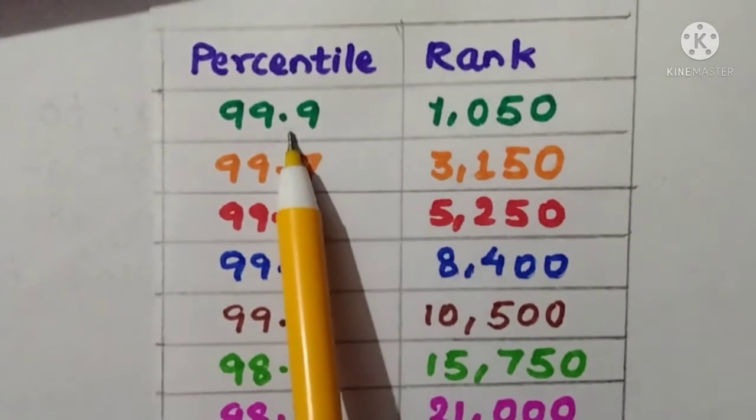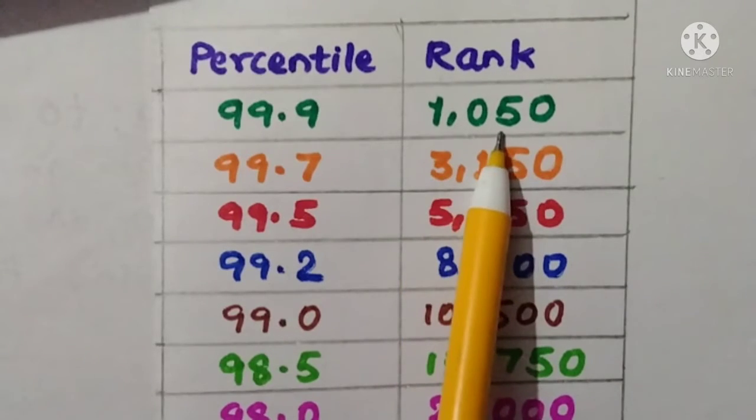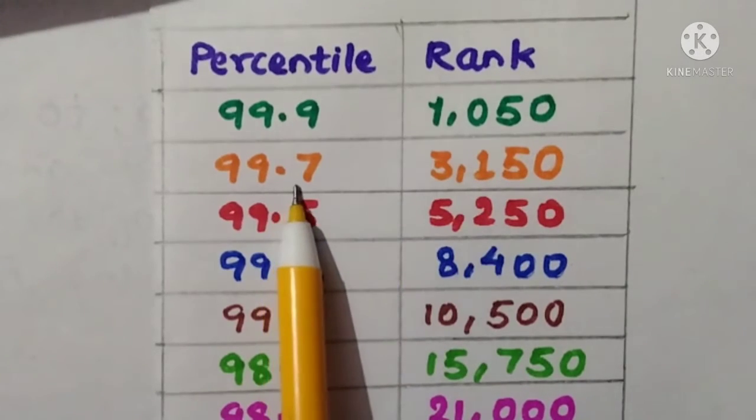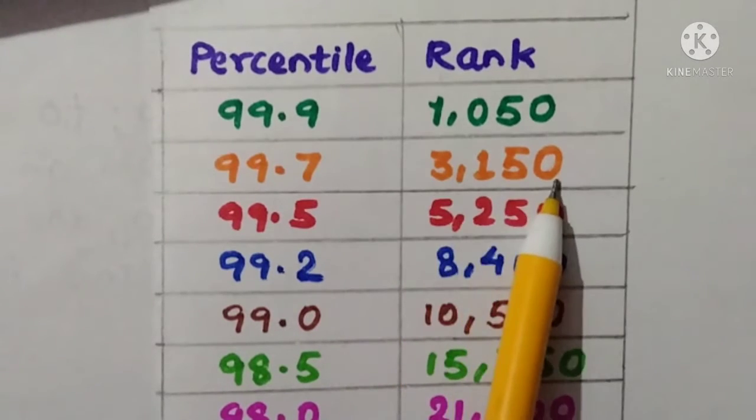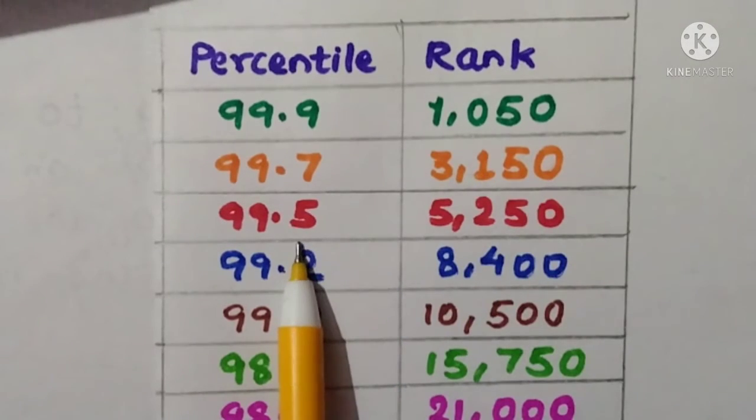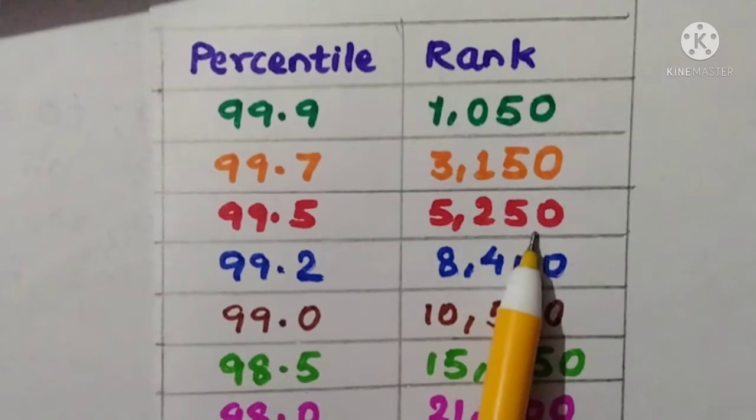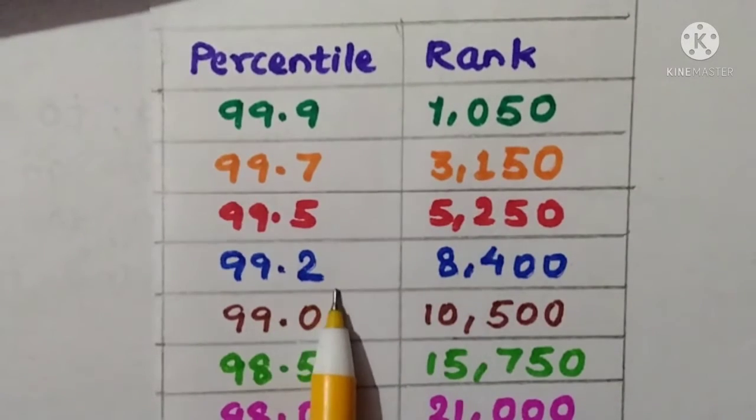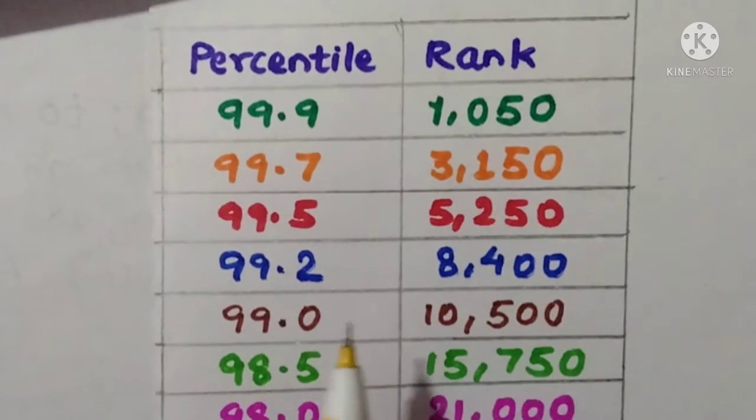For 99.9 percentile you can see here that your rank will be 1,050, yes it will be approximately 1,050. For 99.7 percentile it will be 3,150. For 99.5 percentile it is 5,250. For 99.2 percentile it is 8,400 approximately.